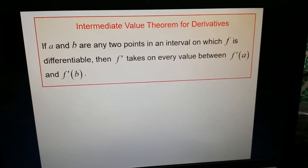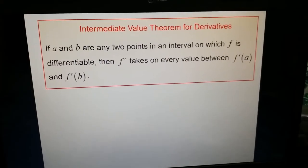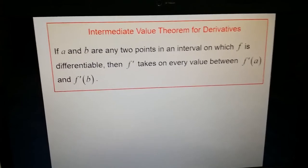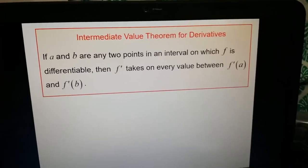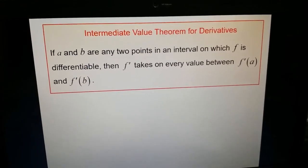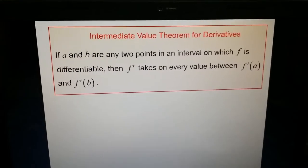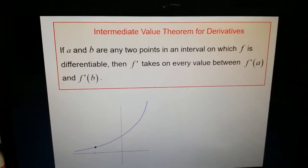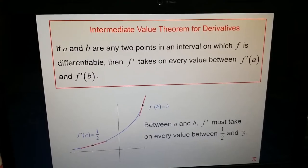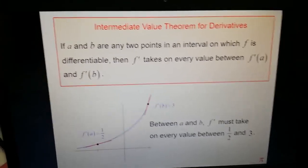Finally, the Intermediate Value Theorem for derivatives: if a and b are two points on an interval where f is differentiable, then f′ takes on every value between f′(a) and f′(b). For example, if f′(a) = 1/2 and f′(b) = 3, then f′ must take on every value between 1/2 and 3 on that interval.